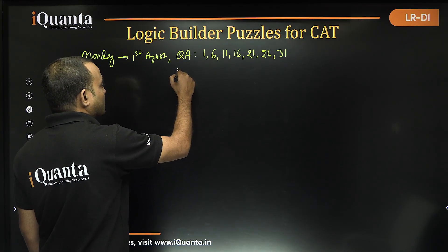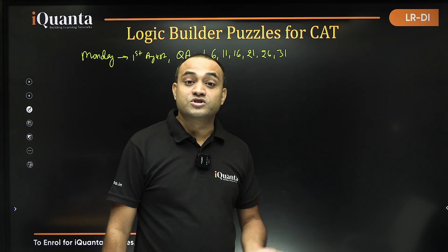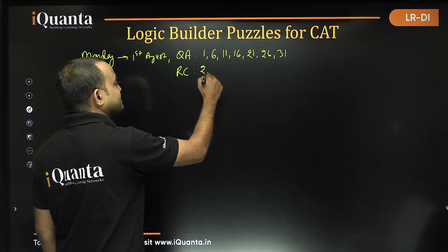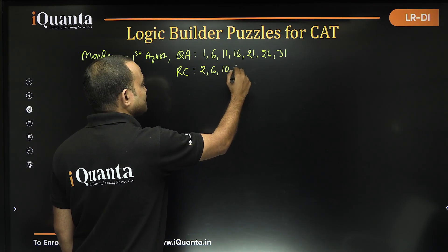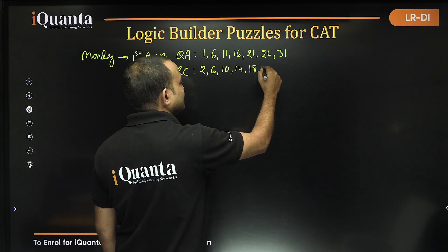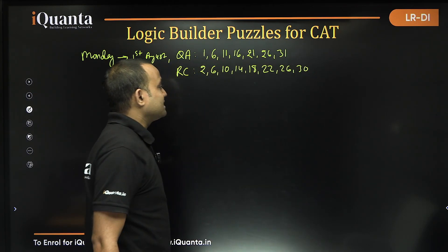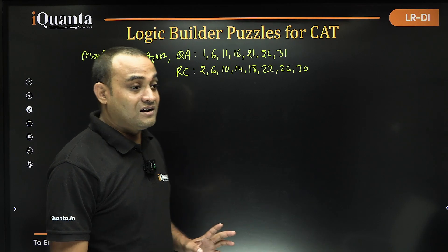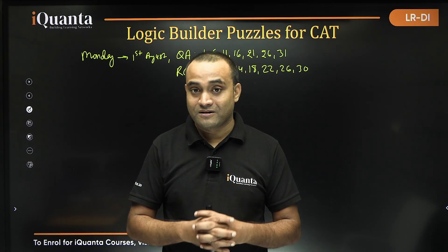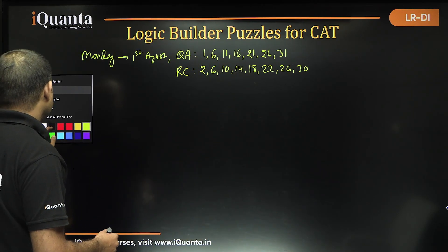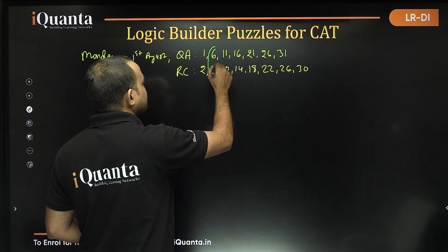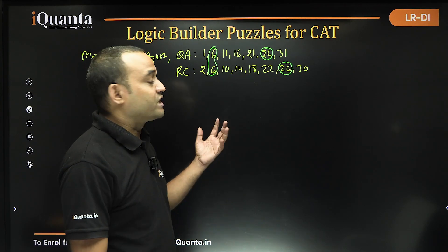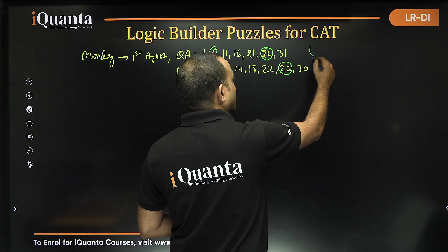For RC, he will start with the first Tuesday. If Monday is 1st, Tuesday is 2nd, so RC will be taught on: 2nd, 6th, 10th, 14th, 18th, 22nd, 26th, and 30th. Looking at the common dates, we have 6th and 26th both appearing in QA and RC schedules. Since there are two common days and not exactly one, this combination is not valid.